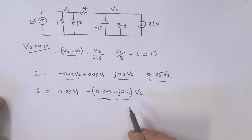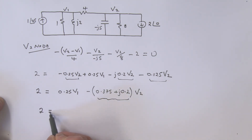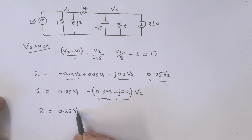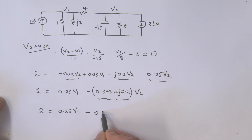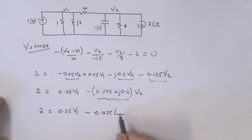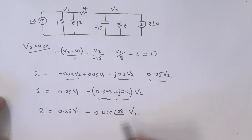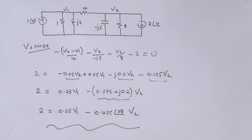Converting the v2 coefficient to polar form: 2 equals 0.25 v1 minus 0.425 at an angle of 28° times v2. That is our second equation in terms of v1 and v2.